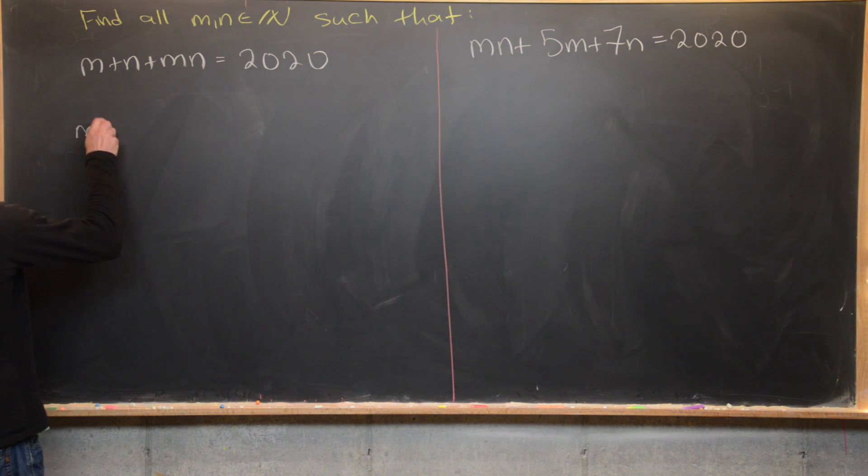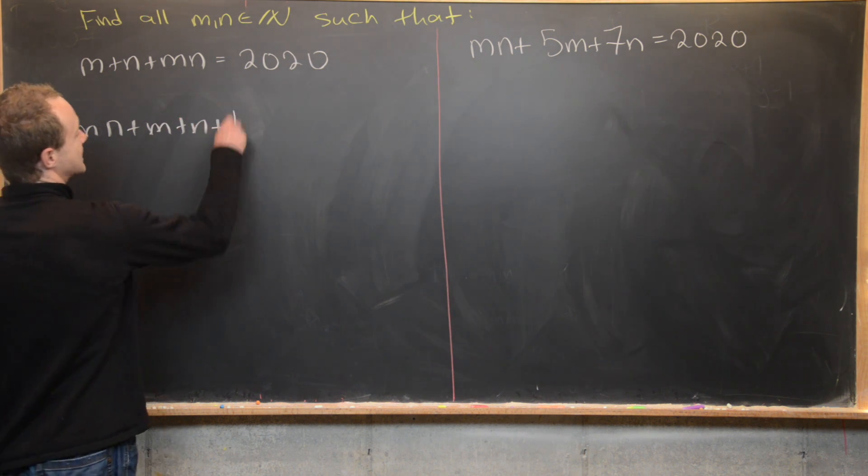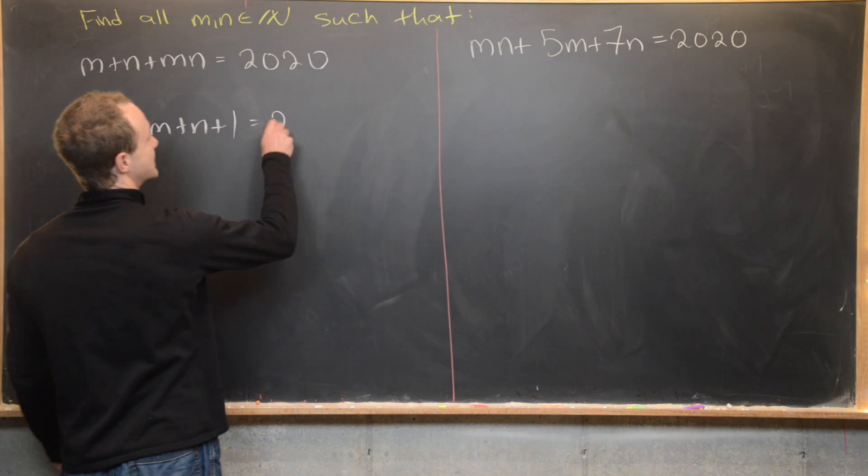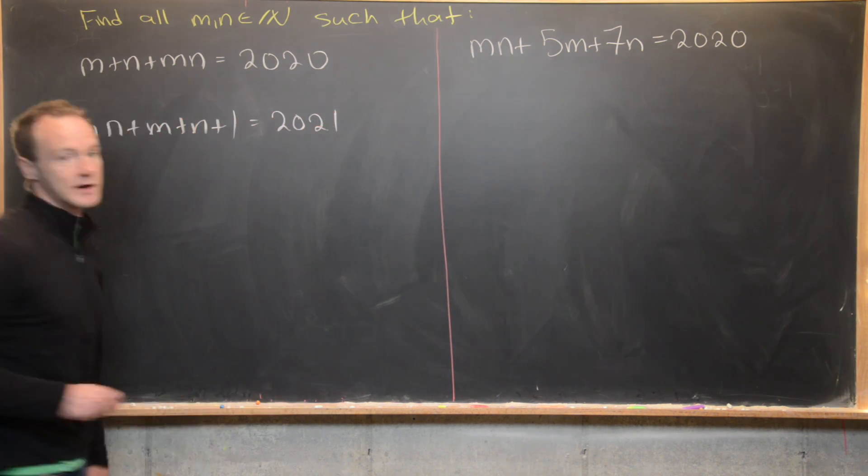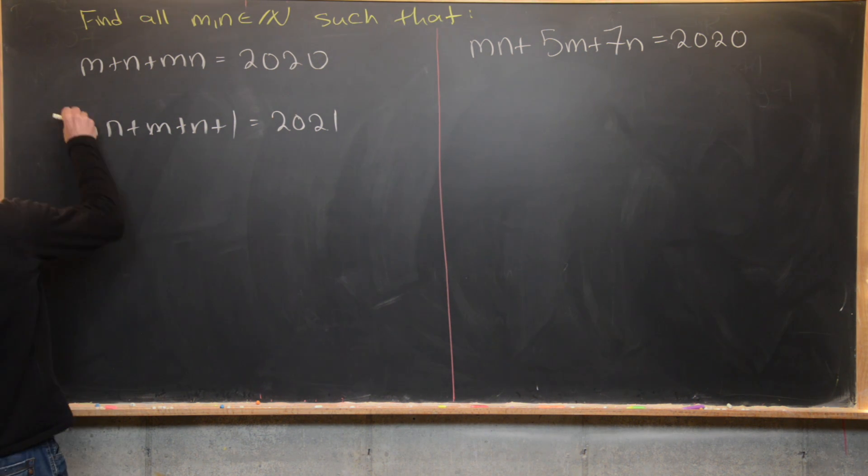So that's going to give us the following setup. I'm going to reorder this a little bit like mn plus m plus n plus 1 equals 2020 plus 1 is 2021. Okay good.